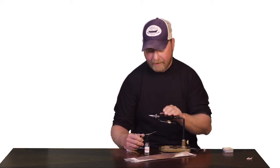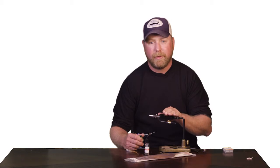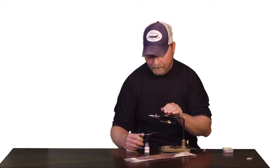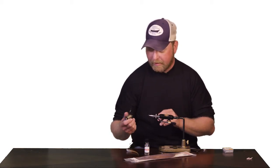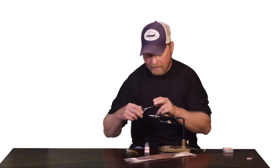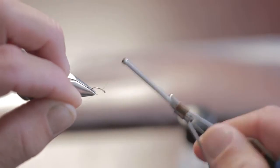We're going to start out with a Diariki number 135 size 18 hook, and we're going to use Uni-thread size 8-0 olive thread on this particular fly.